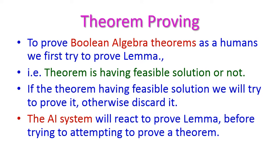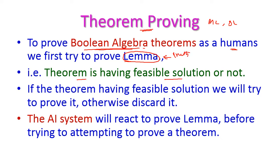The next one is theorem proving. This is another important application of AI, using machine learning and deep learning algorithms to prove theorems. For example, consider the Boolean algebra theorem. How the human will solve this: first the human will identify the lemma of the theorem. Lemma means truth — that is, whether the theorem has a feasible solution or not.